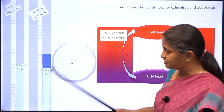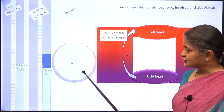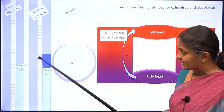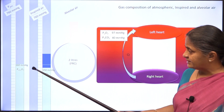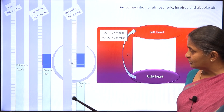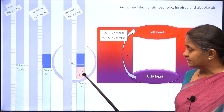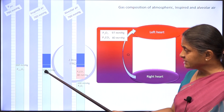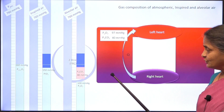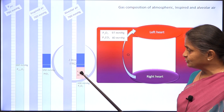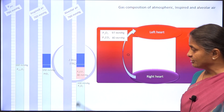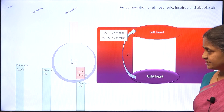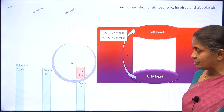What about the composition of alveolar air? There are two major gases in atmospheric air, three gases in inspired air — nitrogen, oxygen, and water vapor — and when it comes to the alveolus, a fourth gas is added: carbon dioxide. Alveolar partial pressure of oxygen is 100 mmHg because some oxygen from inspired air has diffused into blood, and some carbon dioxide from blood has diffused into the alveolus, setting alveolar carbon dioxide partial pressure at 40 mmHg. Setting aside nitrogen and water vapor, we concentrate only on oxygen and carbon dioxide partial pressures.